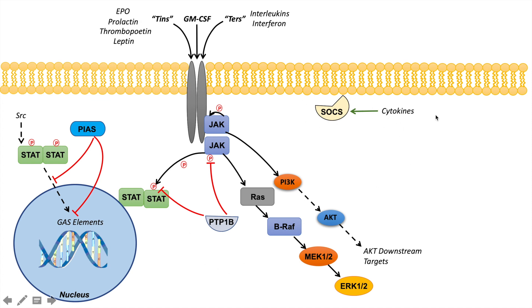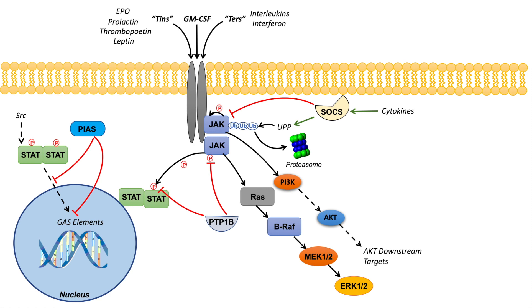SOCS, on the other hand, has to be induced by cytokines. But SOCS can inhibit JAK from becoming activated, and can also activate the ubiquitin-proteasome pathway to lead to ubiquitination of JAK protein kinase, eventually leading to the degradation of JAK. So SOCS can both inhibit the JAK kinase and activate the ubiquitin-proteasome pathway leading to degradation of JAK, making them potent inhibitors of the JAK-STAT pathway that are secondarily activated by cytokines.